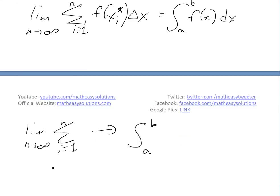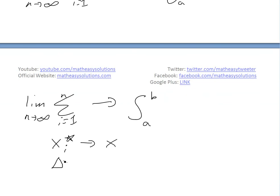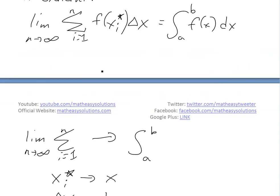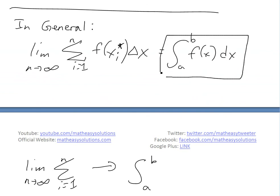we're just writing the interval in now, and then, the x_i*, we just set it to x, and the delta x, we just set it to dx. And then, that's all we're doing is we're just transforming to this notation here, and this is all one symbol here.